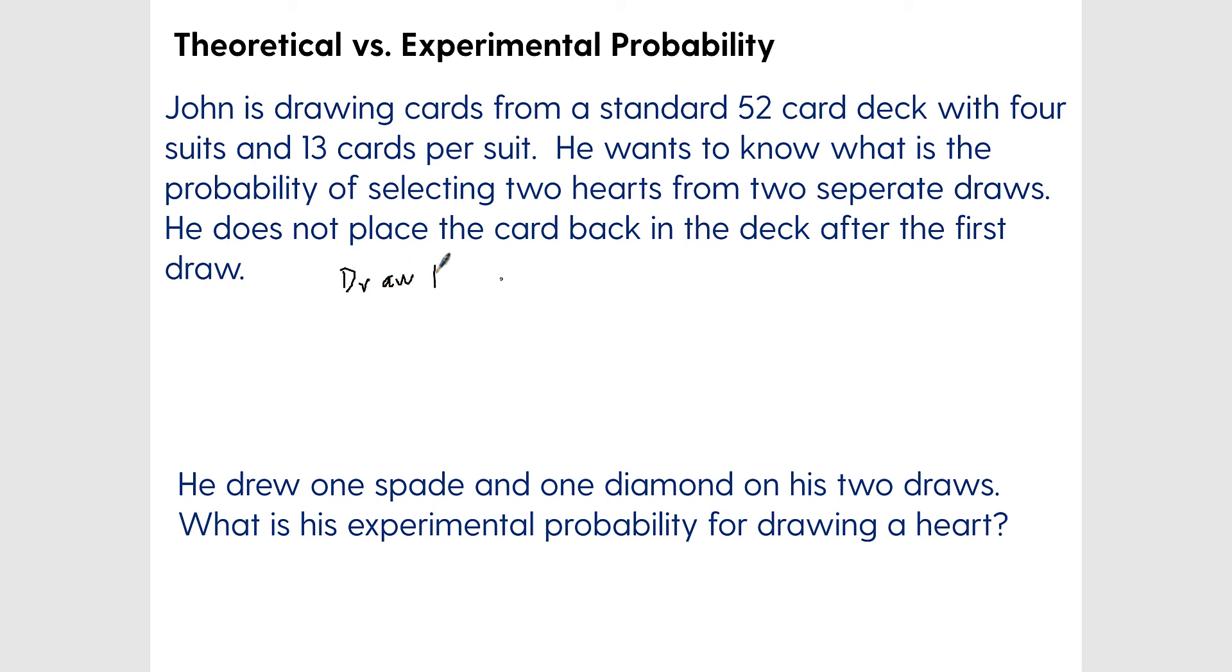Here's draw one and then draw two. We want hearts, so it's hearts over the total. At the very beginning, he's got a full deck, so he's got 52 cards—we're not assuming jokers or anything—and there's 13 hearts in the deck, so 13 cards per suit. He's got a 13 out of 52 chance, or one-fourth chance of getting hearts. We can actually reduce this to one-fourth if we want.